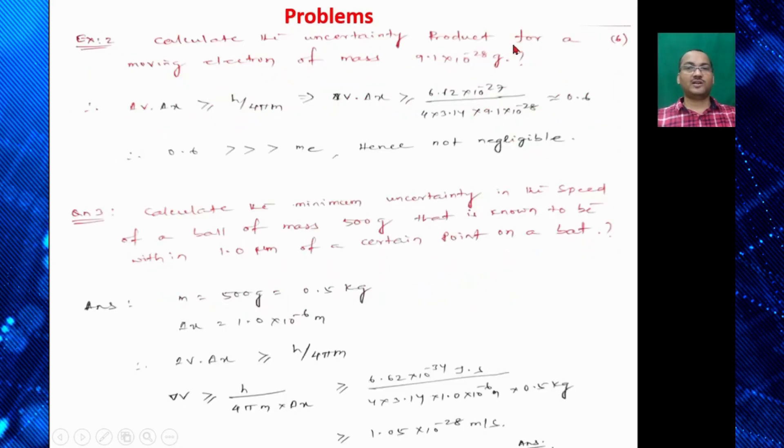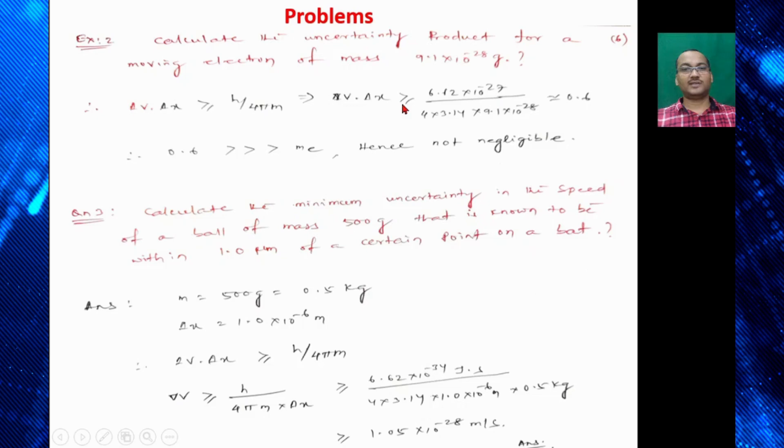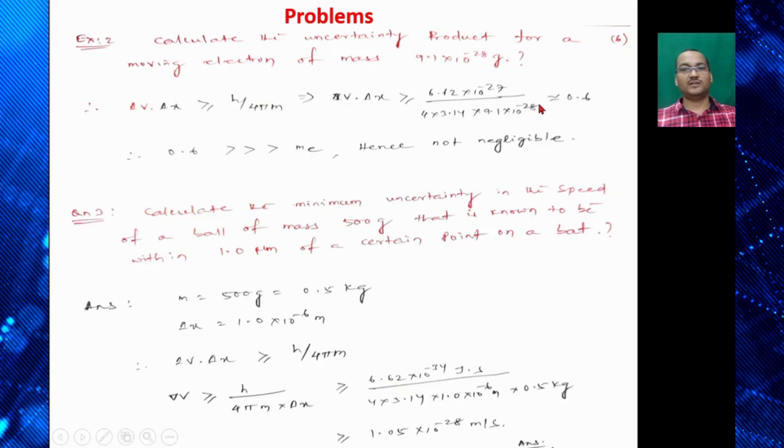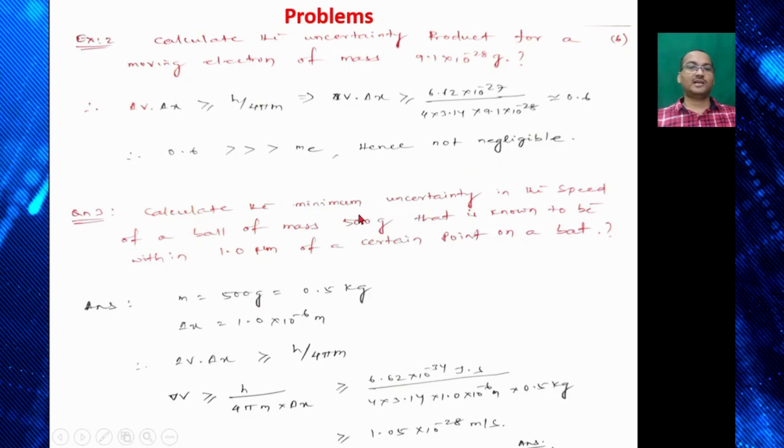Next calculate the uncertainty product for a moving electron of mass 9.1×10⁻²⁸ gram. We know ΔP × ΔX ≥ h/4πm. ΔP × ΔX will be ≥ 6.62×10⁻²⁷, that is Planck's constant, divided by 4 × 3.14 π value, and mass of electron is 9.1×10⁻²⁸. So which is found to be 0.6. So 0.6 is greater than the mass of electron. So hence it is not negligible. You cannot neglect.